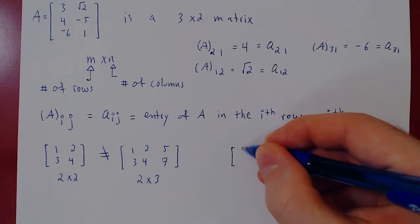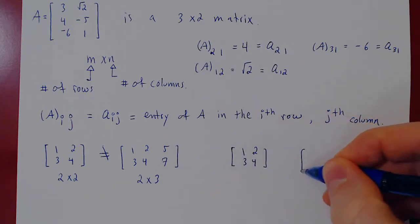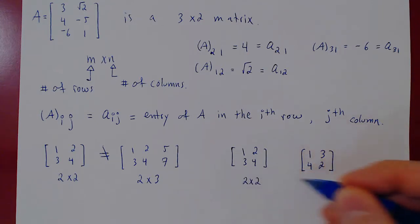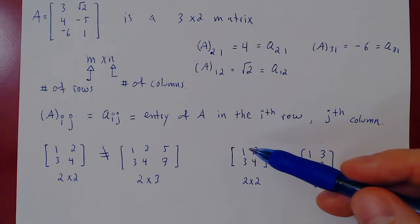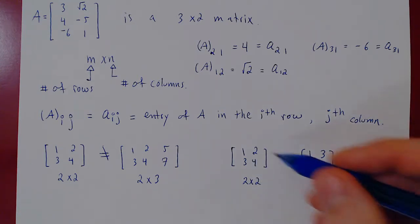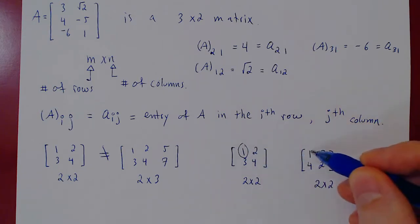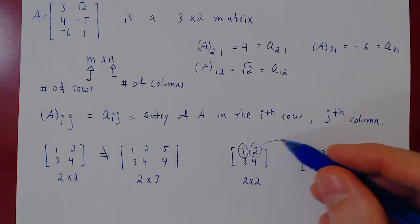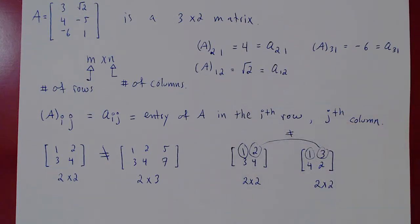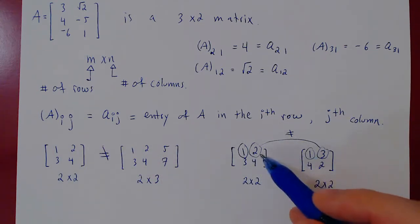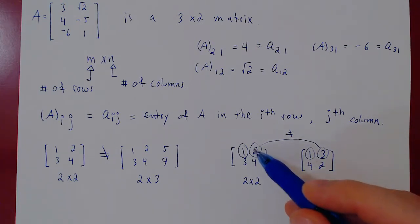Our notion of equality means they are literally identical elements. So the size is not enough — we need not just the same entries, but the same corresponding entries. The 2 in row 1, column 2 must appear in row 1, column 2 of the other matrix as well, and so on for every entry. So matrices 1, 2, 3, 4 and 1, 2, 3, 4 are equal: same size and the same corresponding entries — 1 with 1, 2 with 2, 3 with 3, 4 with 4.